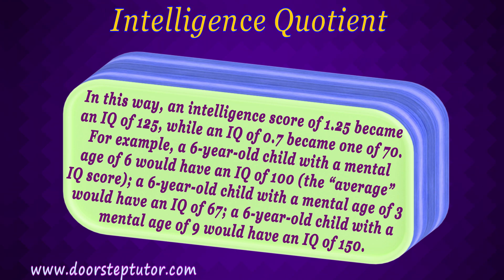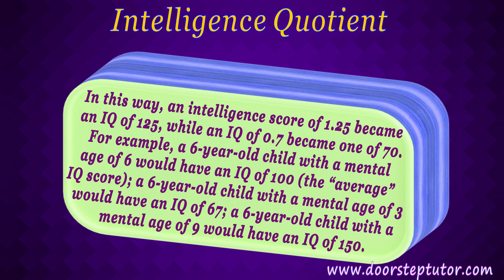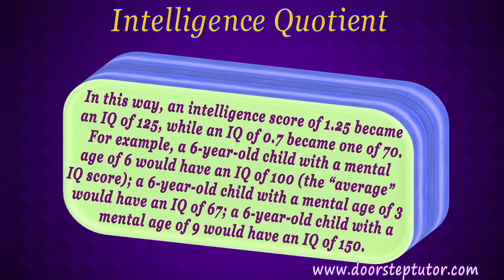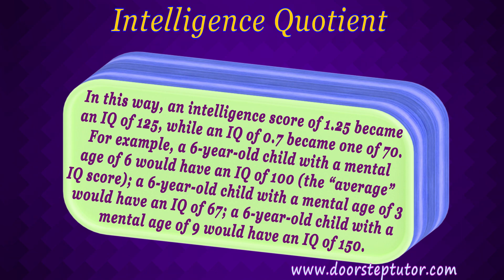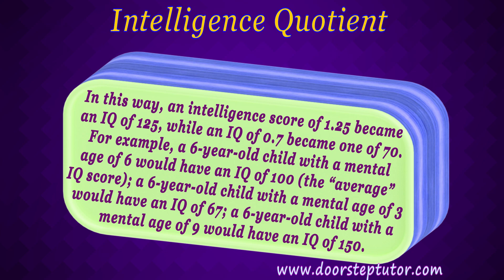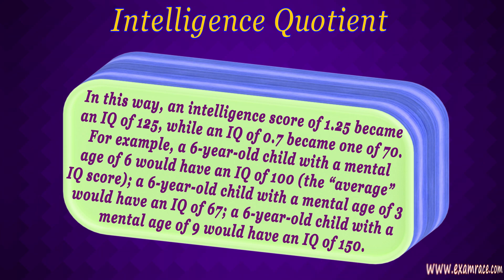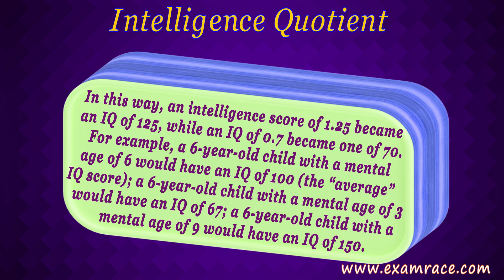For example, a 6-year-old child with a mental age of 6 would have an IQ of 100 — the average IQ score. A 6-year-old child with a mental age of 3 would have an IQ of 50, or a 6-year-old child with a mental age of 9 would have an IQ of 150.